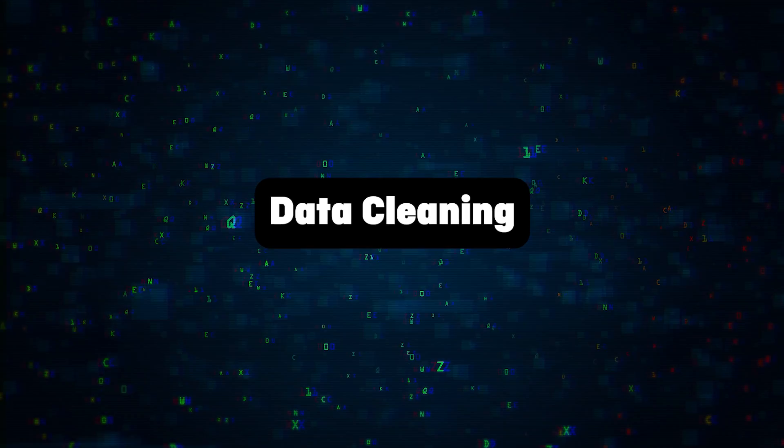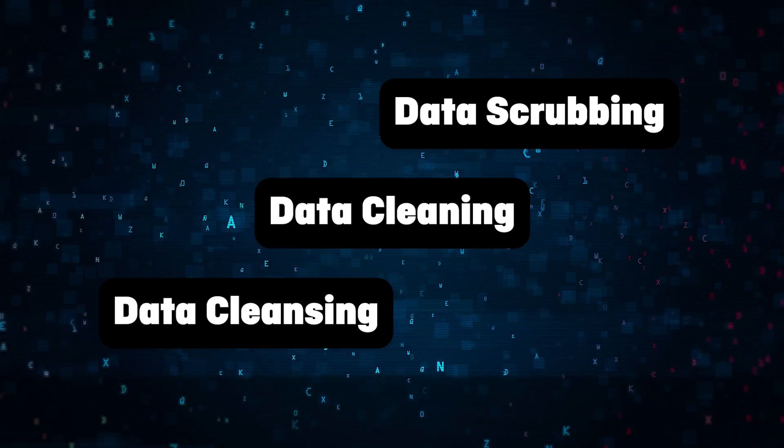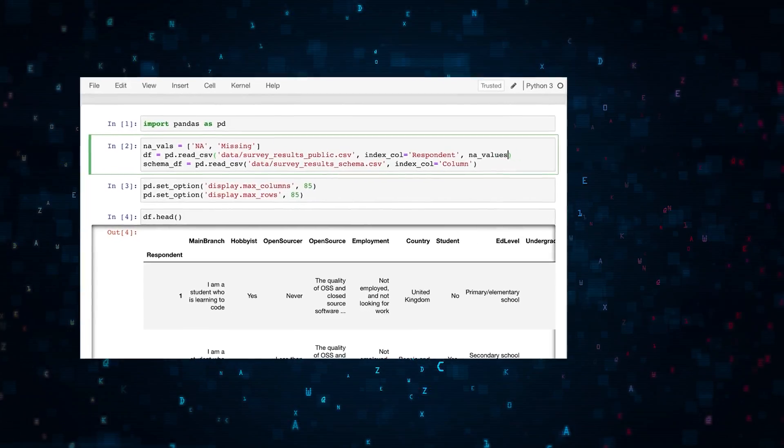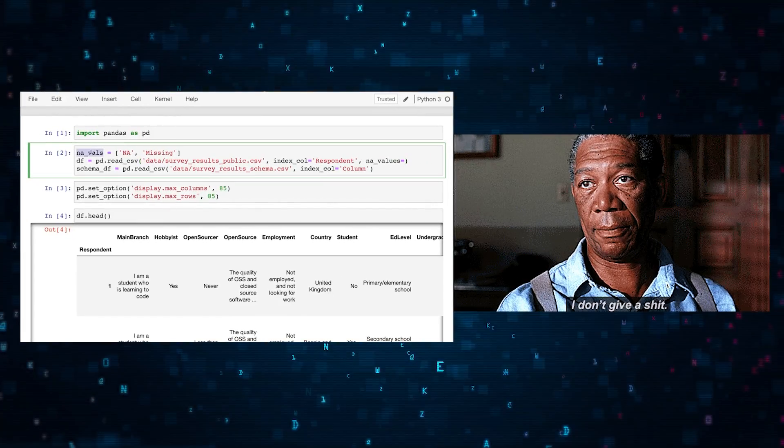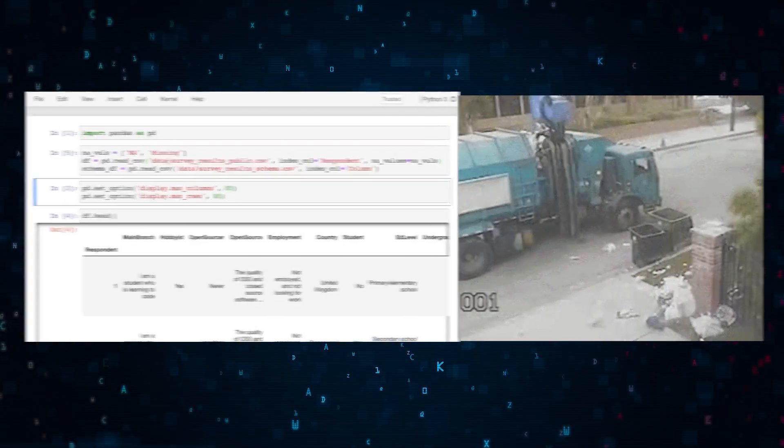First skill: data cleaning, also known as data cleansing or data scrubbing. Basically, it's the process of identifying, correcting, or removing errors in your data sets. So why is this actually even important? Well, garbage in, garbage out.